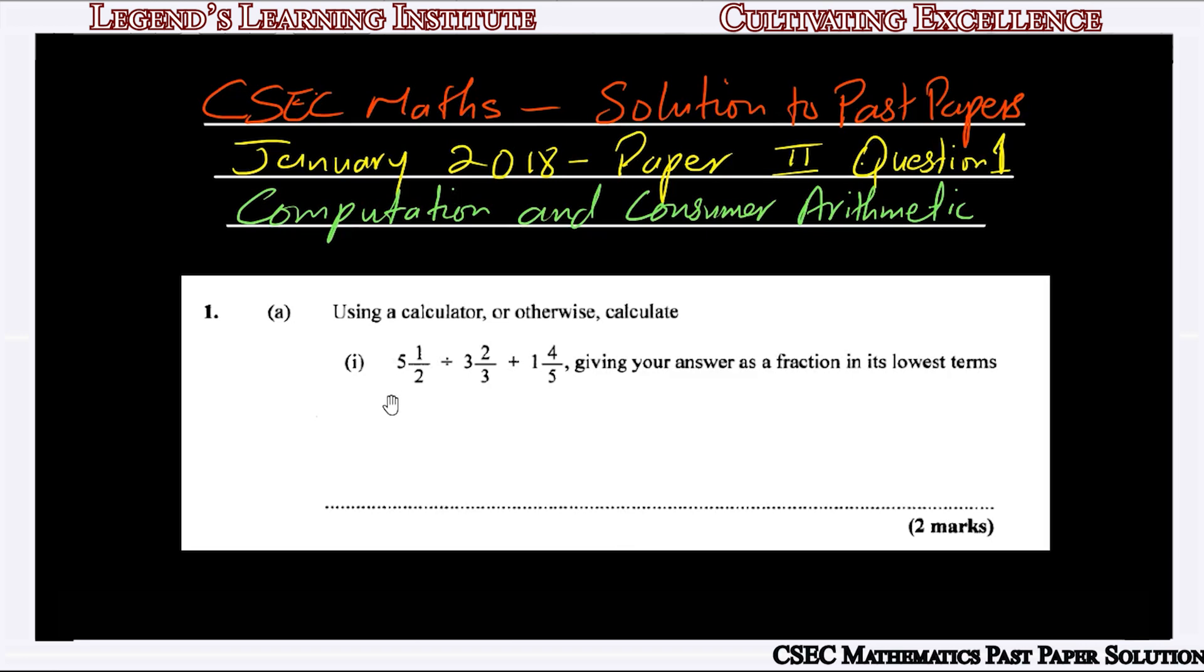Part 1 of A says: using a calculator or otherwise, calculate 5½ divided by 3⅔ plus 1⅘, giving your answer as a fraction in its lowest terms.